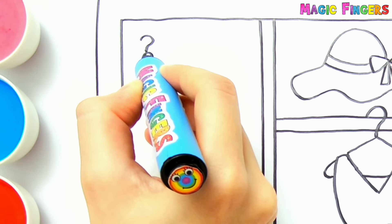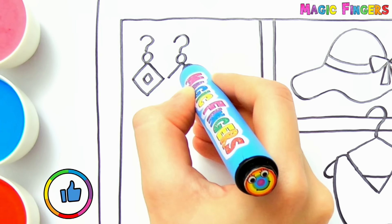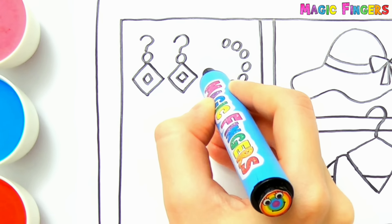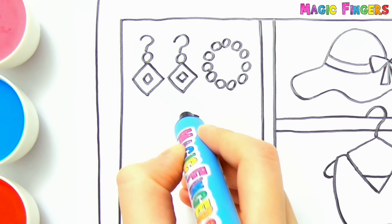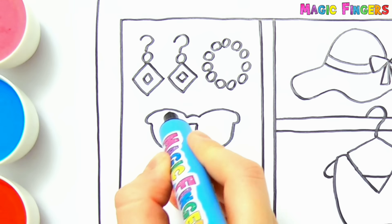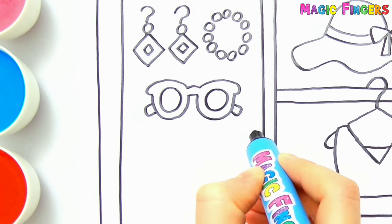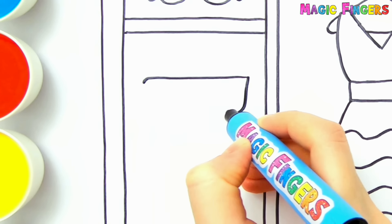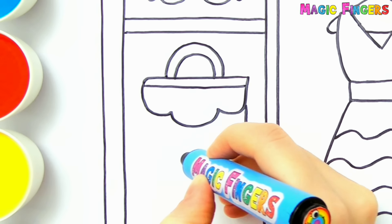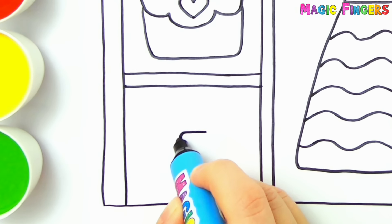And let's draw earrings. Now I'm drawing a necklace. And I'm drawing sunglasses here. Let's draw a handbag here. There is a heart on it. And let's draw another bag here.